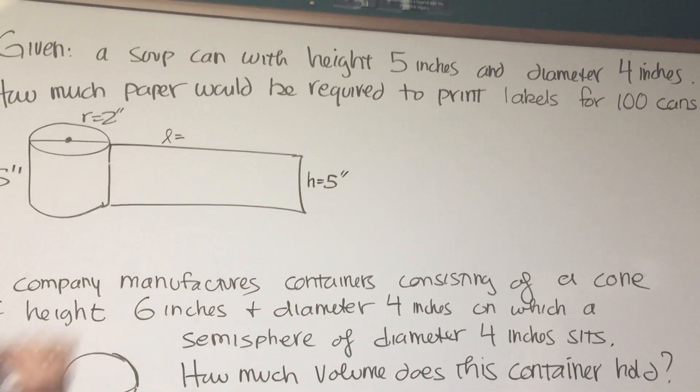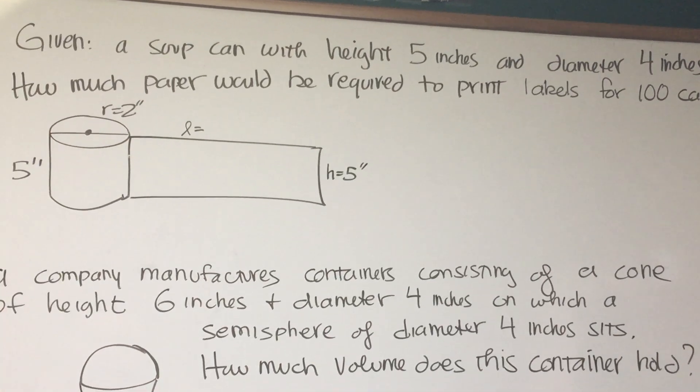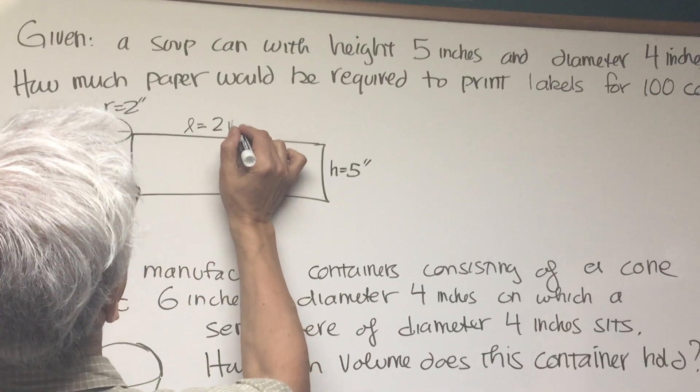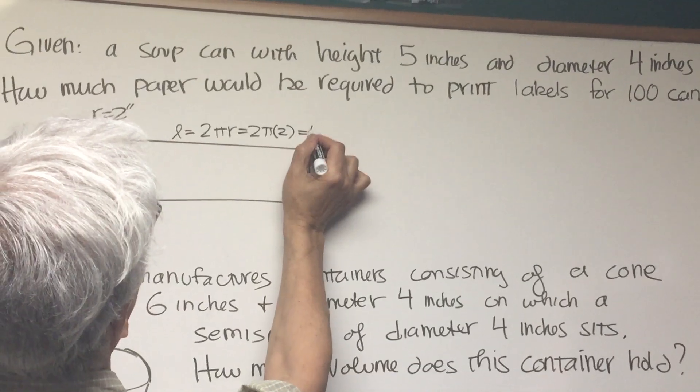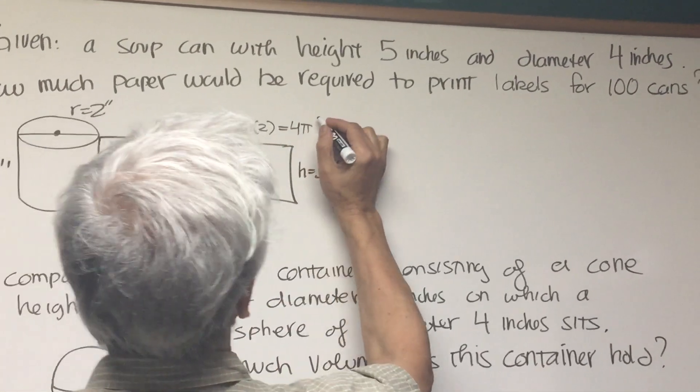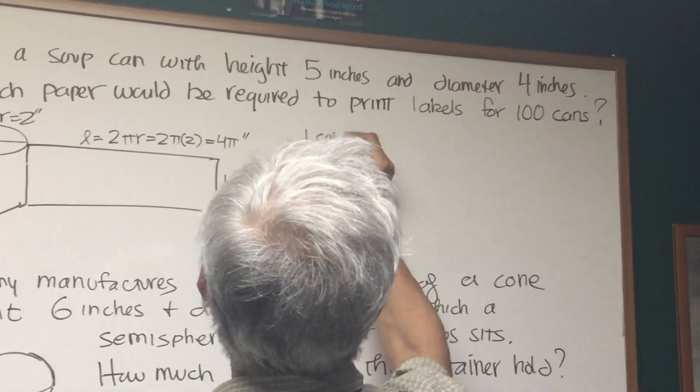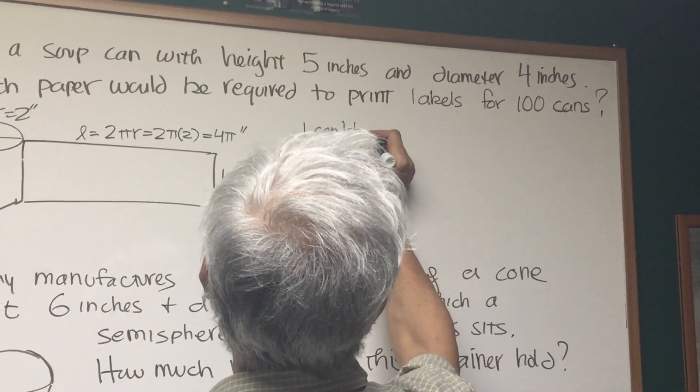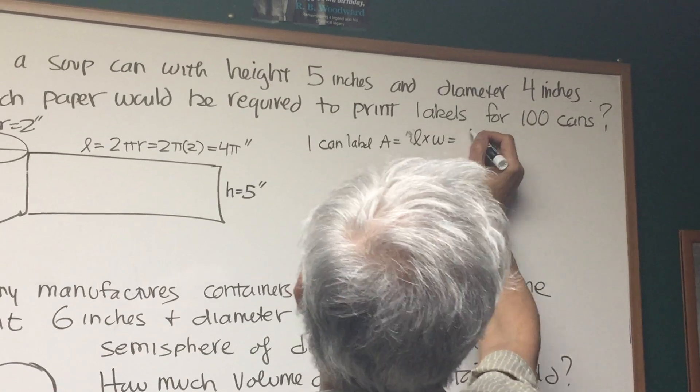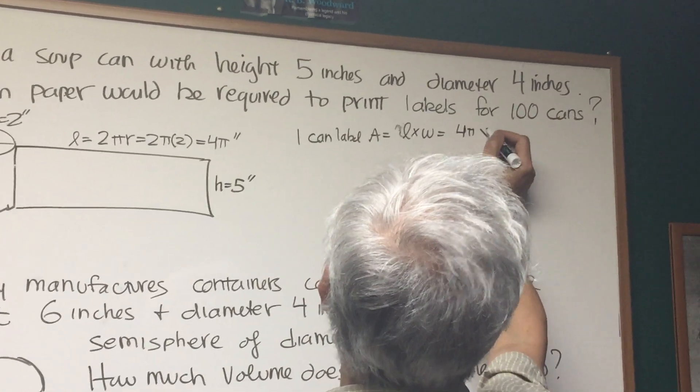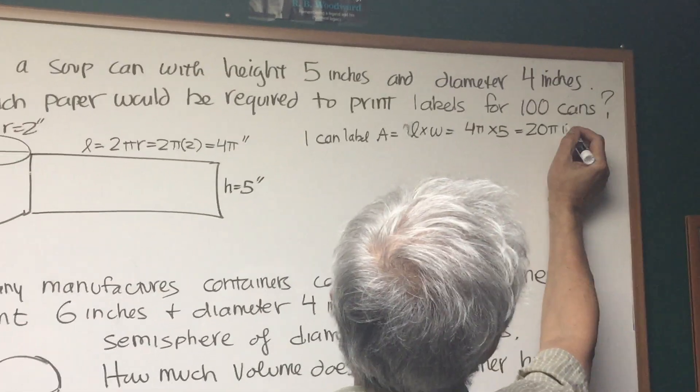But what is the length of this rectangle? Well it's going to be the circumference of the circle. And we know that the circumference of a circle is 2πr, or in this case 2π times 2 or 4π. So that's 4π inches. So that means for one soup can, one can label, the area is going to be length times width, which is going to be 4π times 5, which is going to be equal to 20π square inches.